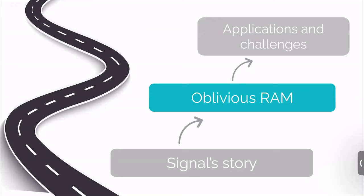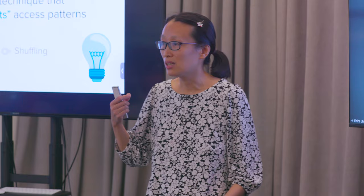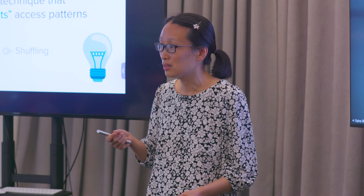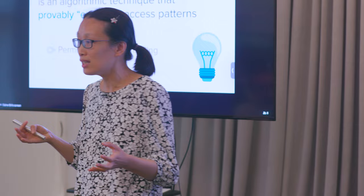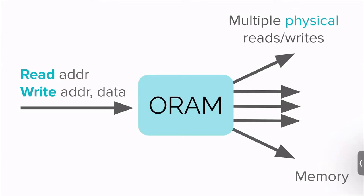Let me tell you about how Oblivious RAM algorithms work and how this area evolved over time. ORAM is an algorithmic technique that can provably obfuscate memory access patterns, and the security you get is very strong — basically the same security as encryption. At first sight, it's counterintuitive, because we know we can encrypt data, but access patterns are a side effect of a program's execution. How can you actually encrypt side effects? Under the hood, these algorithms are permuting memory blocks and keep shuffling them as you access them, obfuscating access patterns.